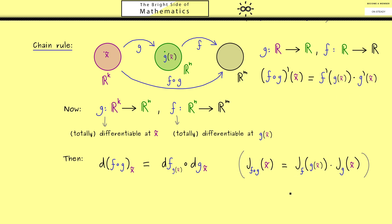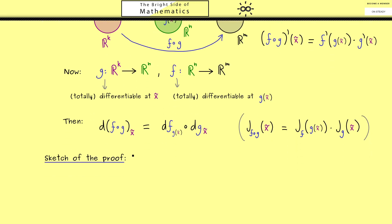In summary: if we have two maps that are both totally differentiable, then the composition of both maps is also totally differentiable, and we know how to calculate the derivative. Proving this chain rule works the same as in the one dimensional case, so I'll just tell you the idea of the proof. As ingredients we need the fact that g and f are totally differentiable.